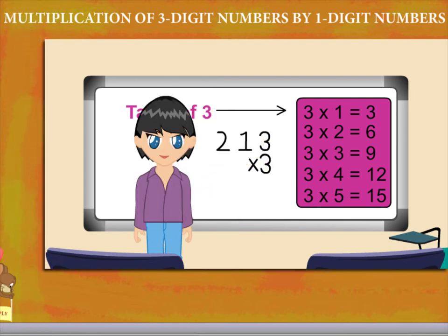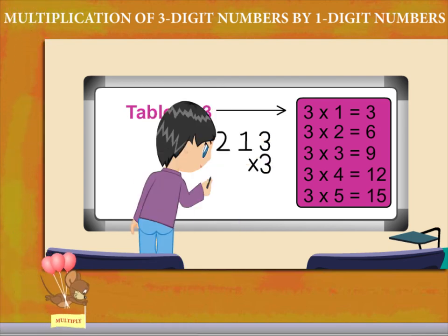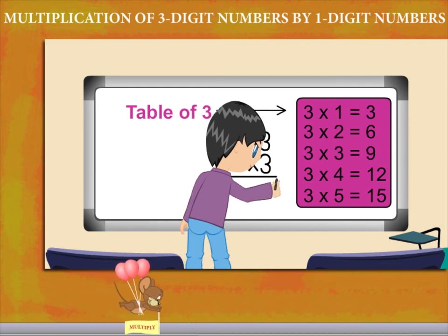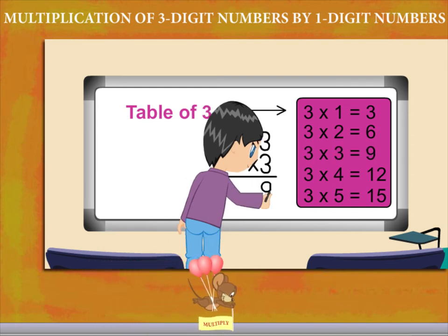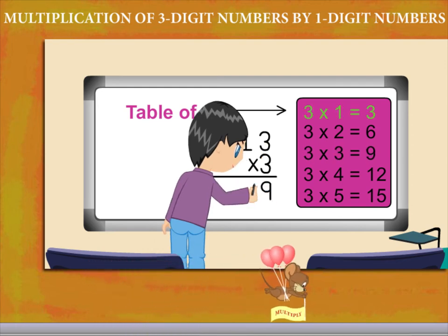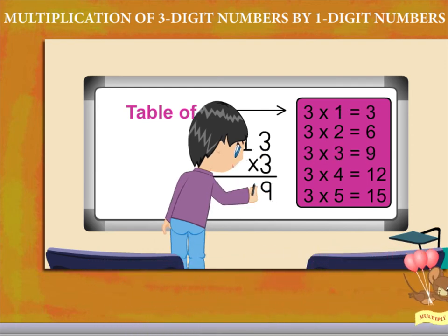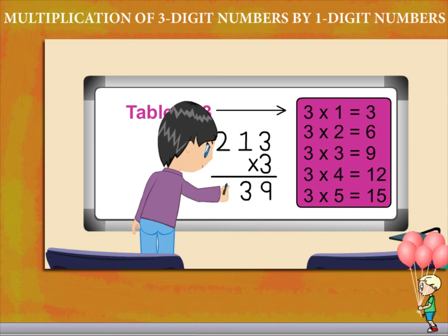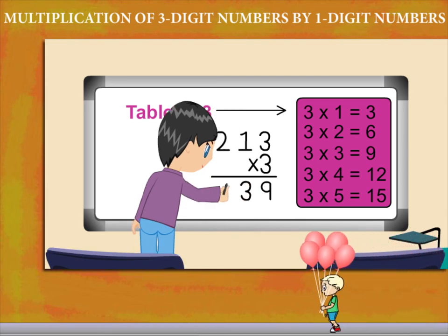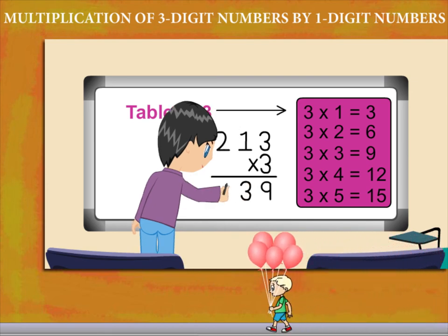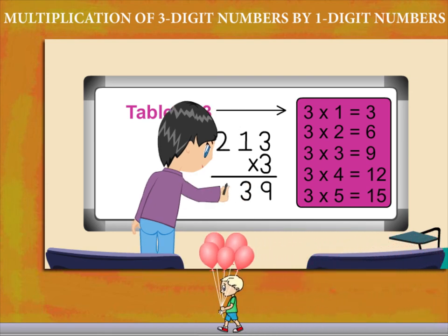She multiplies the 1s: 3 3s are 9. Then 3 1s are 3. She writes 3 in the tens place and multiplies 2 hundreds by 3.